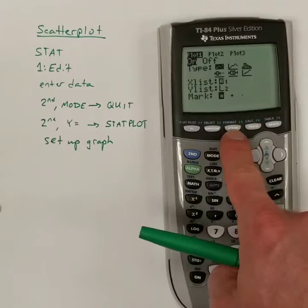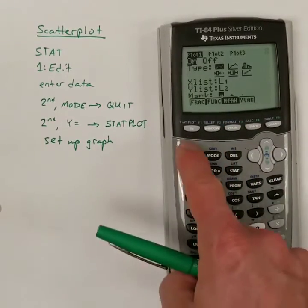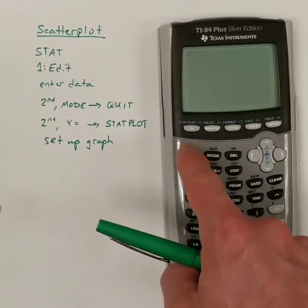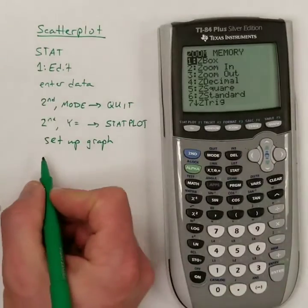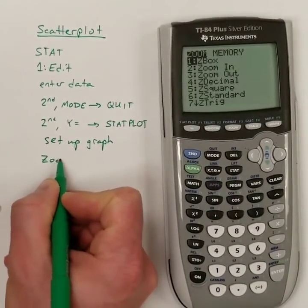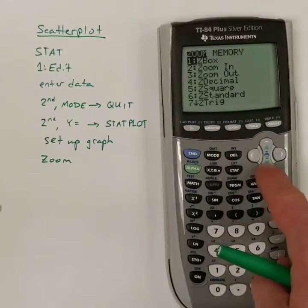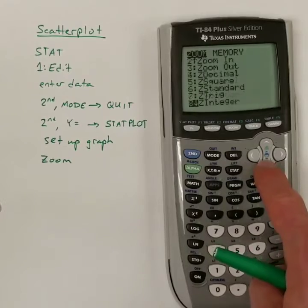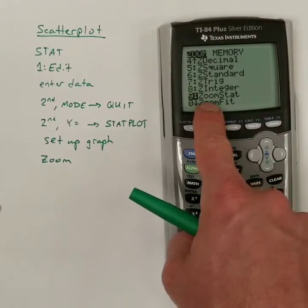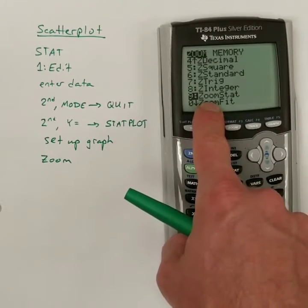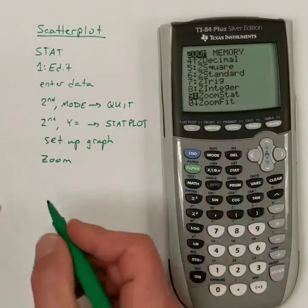And then, we're going to go to the zoom button. So, from in there, if I hit zoom, there it is. If I hit the zoom button, I'm going to go to, and it's not on here, I've got to scroll down. Something called zoom stat. It's going to select a specific window to accurately represent the data that I have entered if I go to zoom stat. So, that's the ninth one down. Nine is zoom stat.